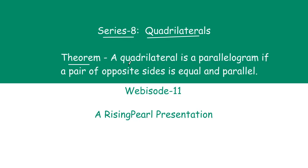So today for webisode 11, we are going to talk about: if a quadrilateral is a parallelogram if a pair of opposite sides is equal and parallel. So basically the theorem is telling us that if a pair of opposite sides is equal and parallel, then that quadrilateral is a parallelogram. So this is what we have to actually prove. Let's find out a little bit more about the theorem first.